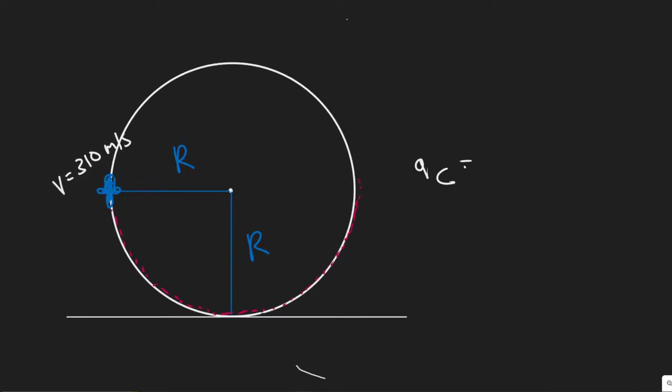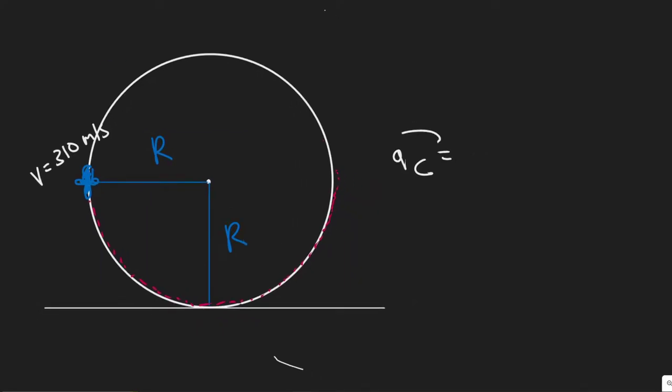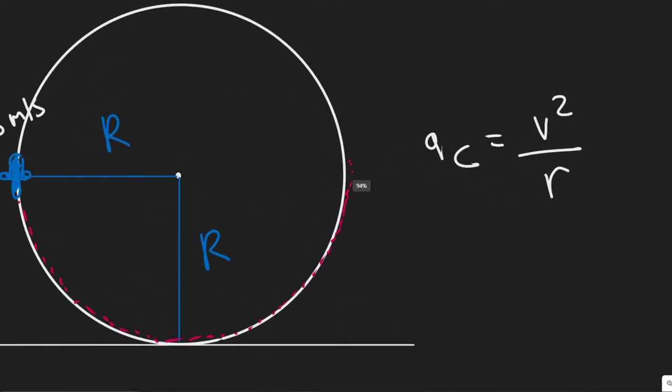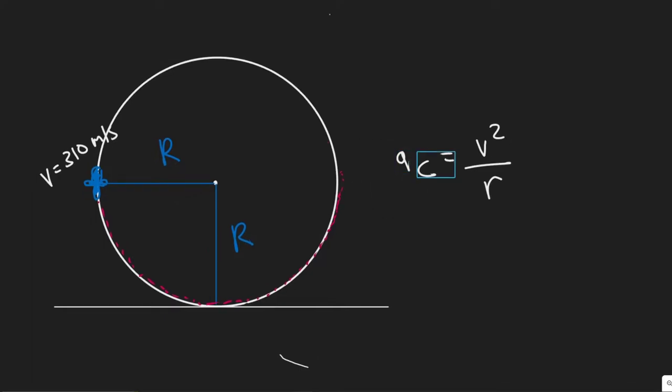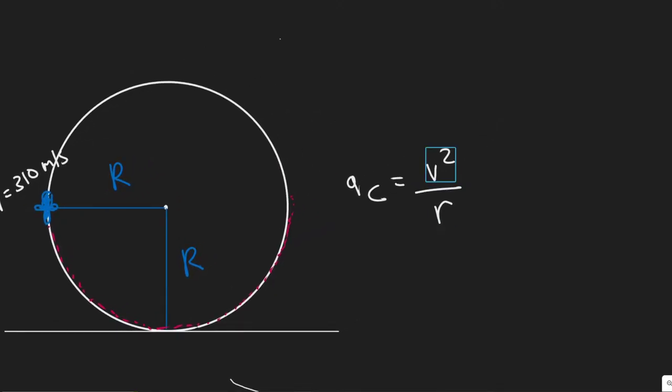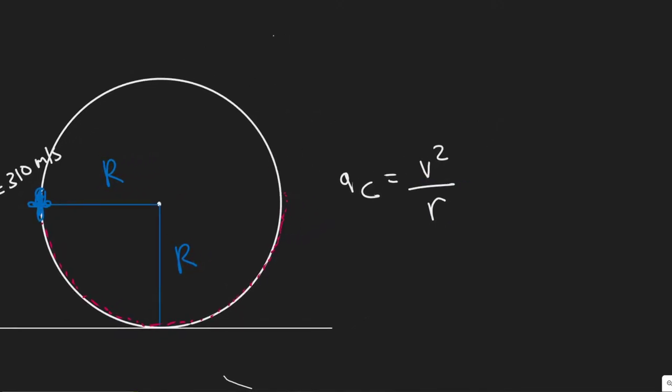Well, we know that the centripetal acceleration, which is basically the acceleration of a circle like this when you're going along in circular motion, the formula for it is v squared over r. So as I said before, r is going to be the height. And we know what acceleration they can experience. Their centripetal acceleration can be a max of 9 g's. And we know their current speed. It's 310 meters per second.